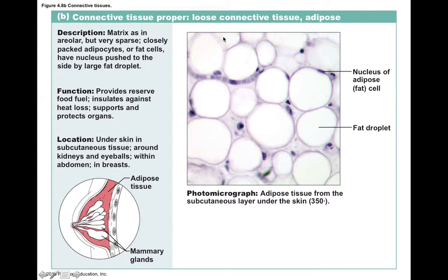The next type is adipose, another loose connective tissue. Adipose is called that because it's mostly made of adipocytes — the fat cells visible here. They are full of lipids, and these lipids are so abundant within the cytoplasm that they push the nucleus off to the side. Each one of these large circles is an adipocyte, and they function in storing lipids.